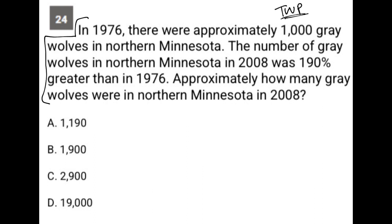The first sentence says: in 1976, there were approximately 1,000 gray wolves in northern Minnesota. So I'm going to write that quantitative information down — 1976, 1,000 gray wolves.